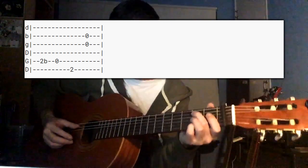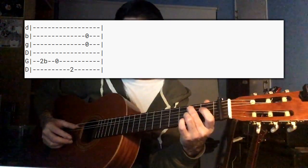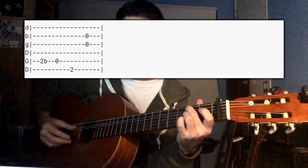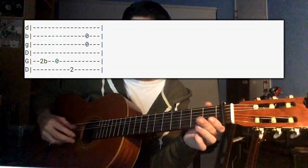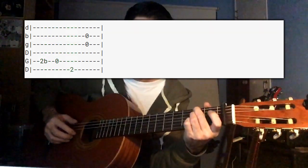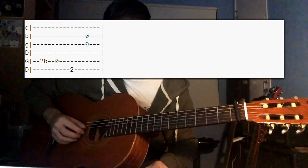And this is where it links into the outro. So that last little bit there. 5th string bend on the 2nd fret, open 5th string, 2nd fret the 6th string, then open 2nd and 3rd strings.